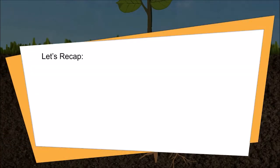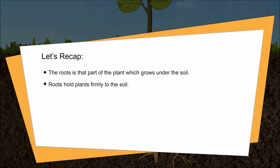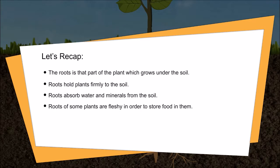Let us recap. The root is that part of a plant which grows under the soil. Roots hold plants firmly to the soil. Roots absorb water and minerals from the soil. Roots of some plants are fleshy in order to store food. Roots are of two types: taproot and fibrous root. Thank you.